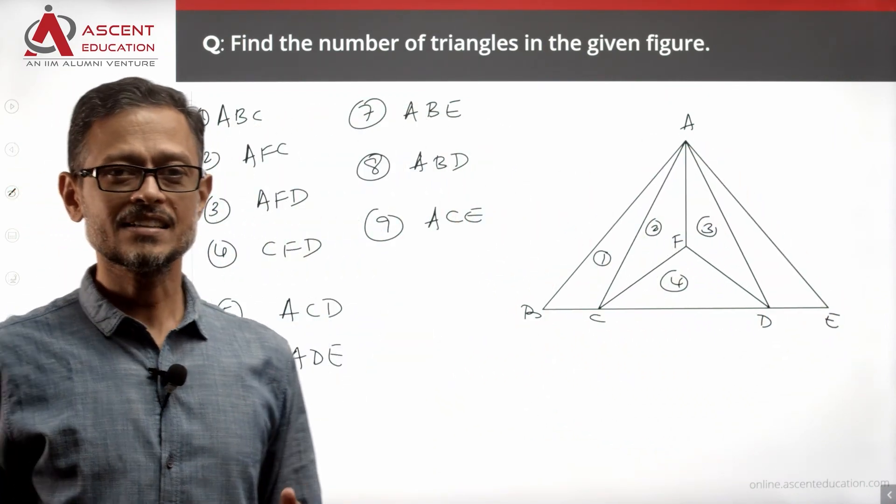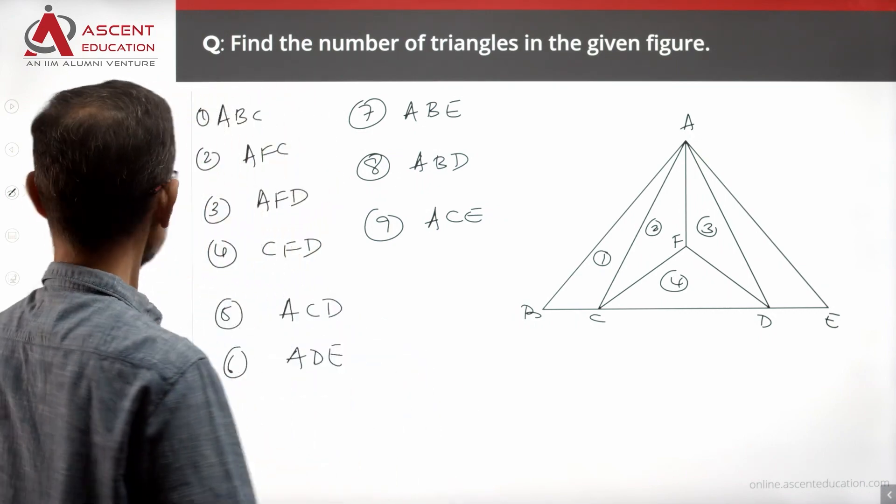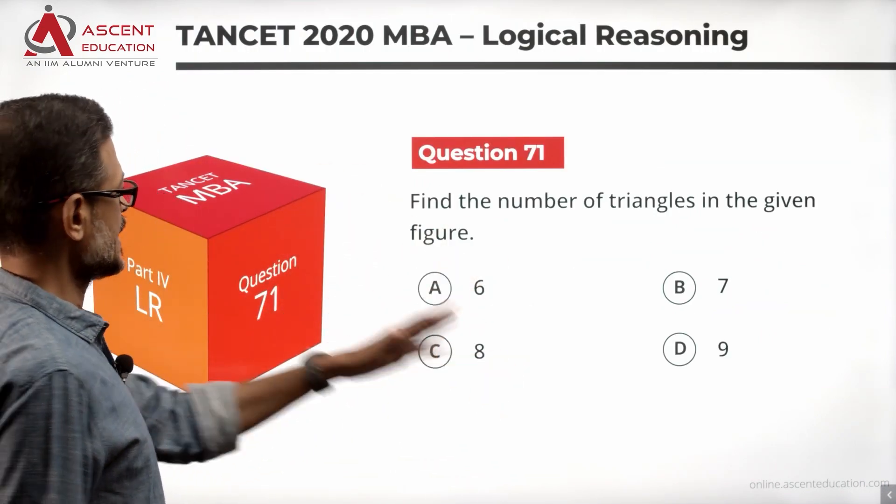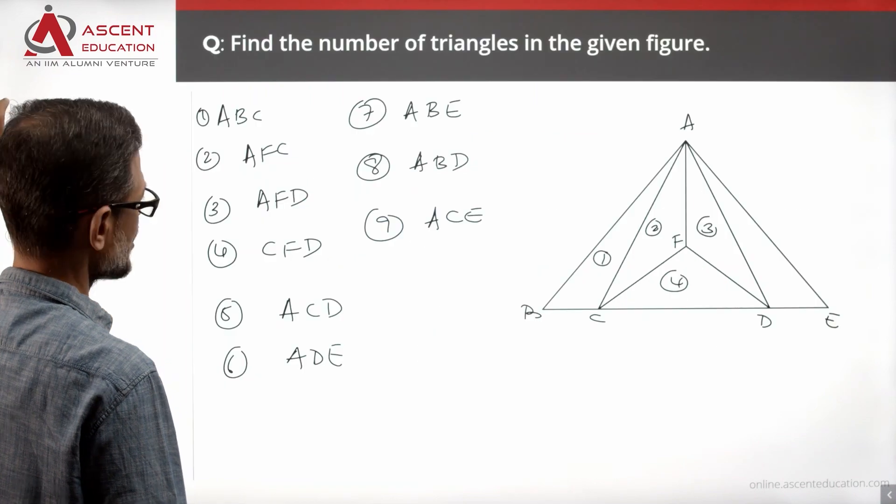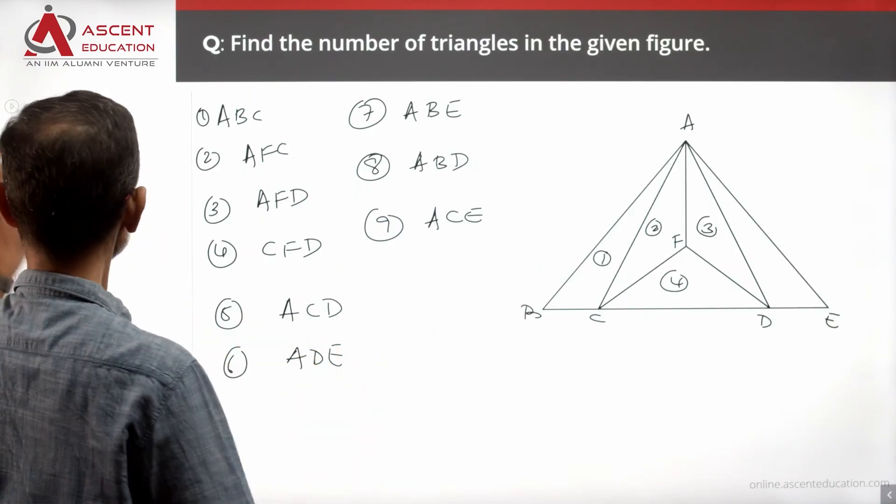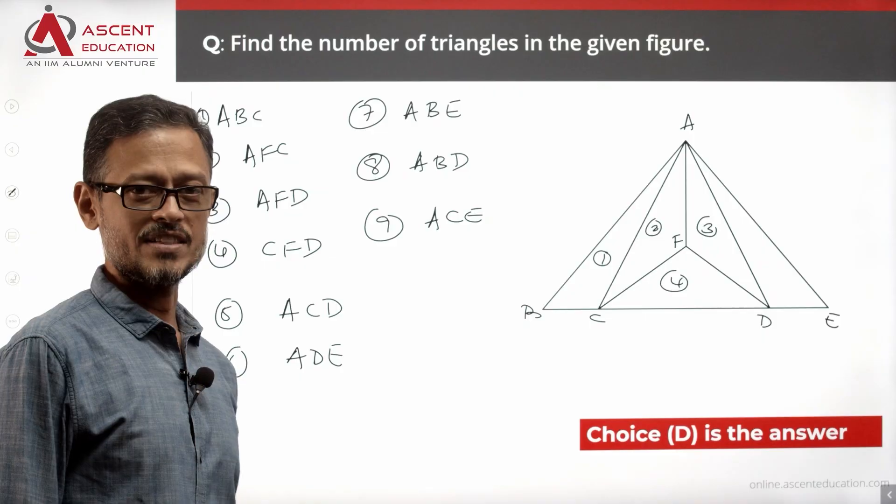So, where are the triangles? There are a total of nine triangles in it. How many triangles? Six, seven, eight, nine. We have to find the correct answer. There are nine triangles. D is the correct answer to this question.